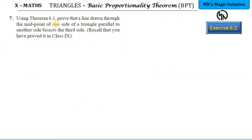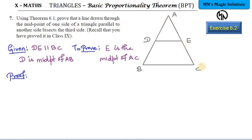Question number 7: using Theorem 6.1, that is your Basic Proportionality Theorem, you have to prove that a line drawn through the midpoint of one side of a triangle, parallel to another side, bisects the third side. This statement is exactly that of the midpoint theorem that you learned in 9th standard. So we need to prove the midpoint theorem using BPT. Technically, we draw a triangle and a line parallel to the base passing through the midpoint of one side.